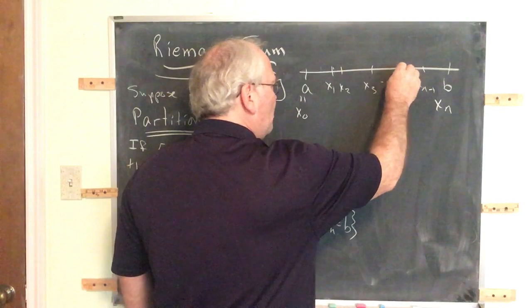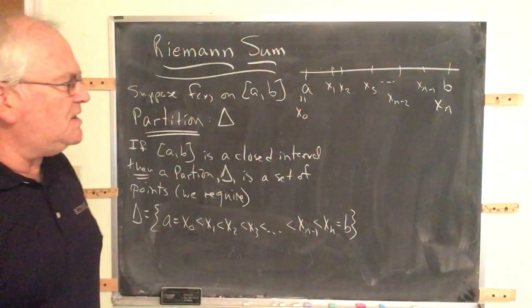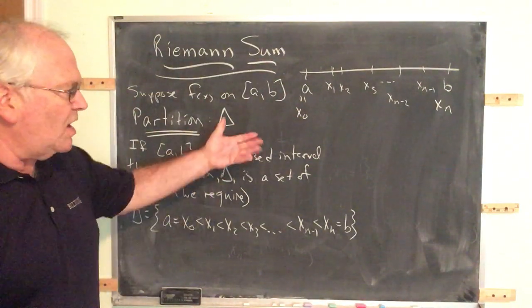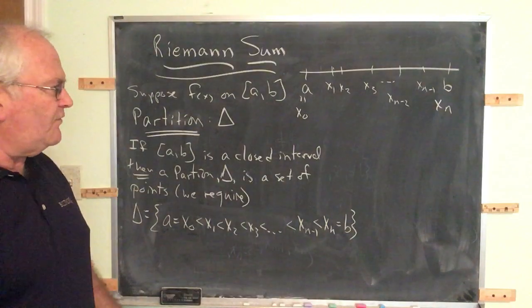We may, if we wish, include xn minus two. We may include or exclude as many of these as we desire to get the point across for our particular work. And so that's a partition of the interval from a to b.